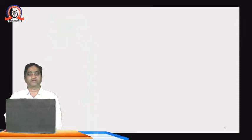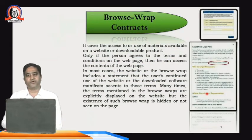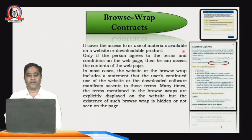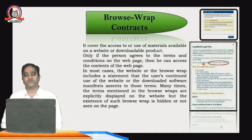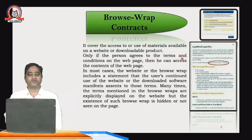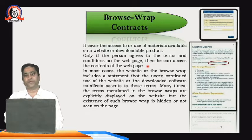Coming to the next important topic: browse wrap contract. It covers access to and use of material available on a website, or downloading of a product. As shown in these images, the seller asks the user to take necessary permission to download a catalog or particular information. Only if the person agrees with the terms and conditions on the web page can he access the content. Whatever is mentioned by the seller, the buyer must accept it because he has no other choice.